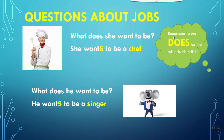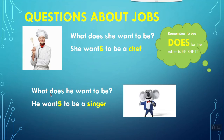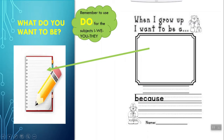Remember: use 'does' for the subjects he, she, or it. In the question, the subject is 'she,' so we use 'does' as the auxiliary, and we add the S — she wants. For 'he,' we also use 'does,' and we add the S — he wants to be a singer. When the subject is 'you,' we use 'do.' Remember to use 'do' for the subjects I, we, you, and they.